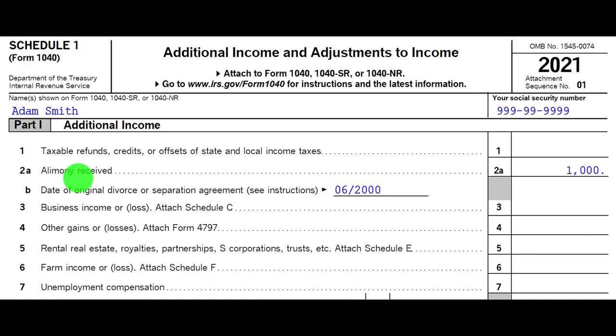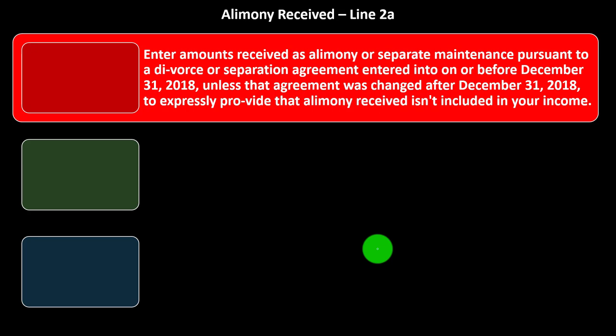Now there's a cutoff: you could still have situations where alimony must be recorded as income if the agreement was made prior to the new change in law. The cutoff is December 31st, 2018. Alimony received must be entered if it was pursuant to a divorce or separation agreement entered into on or before December 31st, 2018, unless that agreement was changed after December 31st, 2018 to expressly provide that alimony received isn't included in income. If the agreement was prior, the negotiation was made under prior tax rules, and we don't want to change those.